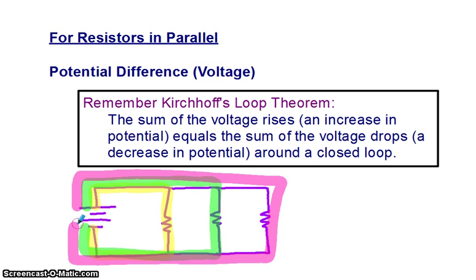So we have to apply the loop rule for each individual loop. So my first loop that I have with R1, I would have the voltage of the battery, the total voltage, is equal to the voltage drop across R1. So we're gaining voltage going through the battery, and then we're losing that voltage as we go through resistor 1.